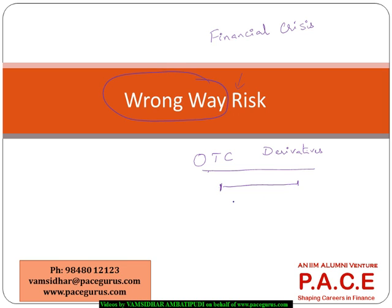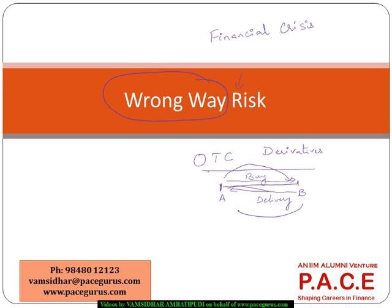Two parties A and B have entered into a contract. A promises to buy something from B and B promises to deliver — or it could very well be a simple swap transaction, where A promises to pay a fixed rate and B promises to pay a floating rate.